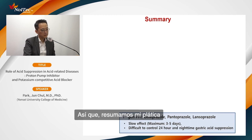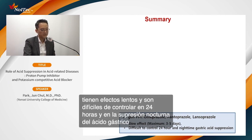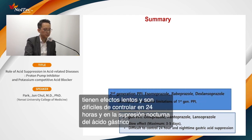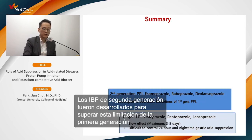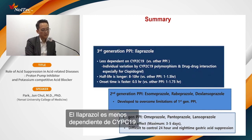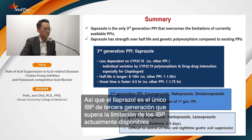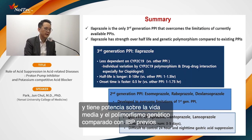In summary: first-generation PPIs like omeprazole, pantoprazole, and lansoprazole have slow onset and difficulty controlling nighttime gastric acid suppression. Second-generation PPIs were developed to overcome these limitations. Third-generation ilaprazole is less dependent on CYP2C19, has a longer half-life, and faster onset time. Ilaprazole is the only third-generation PPI that overcomes the limitations of currently available PPIs, with strengths in half-life duration and reduced genetic polymorphism impact compared to previous PPIs.